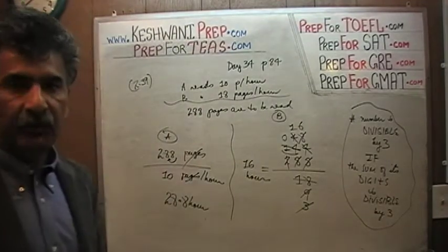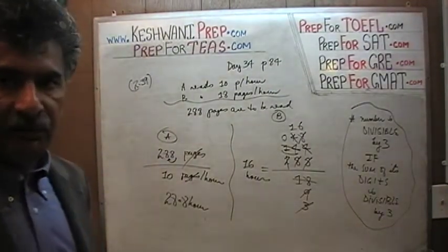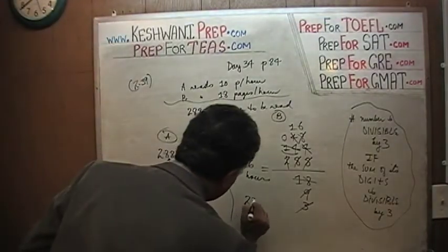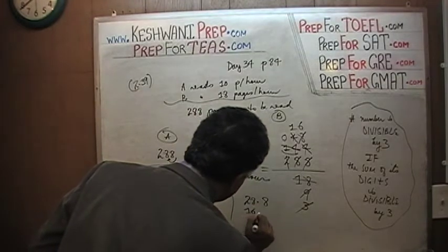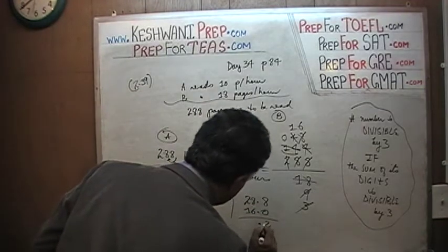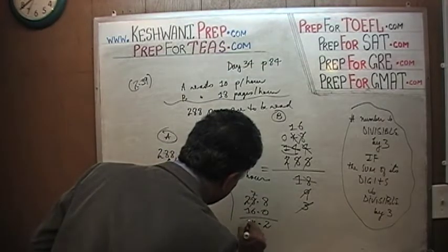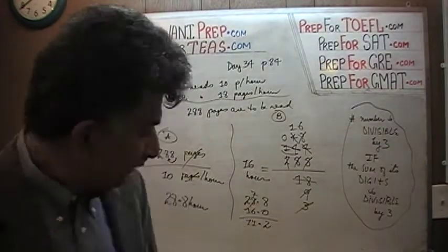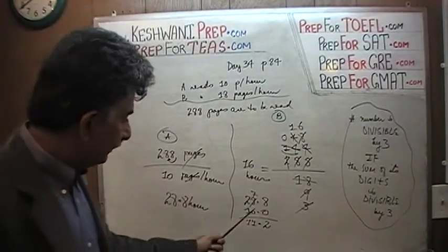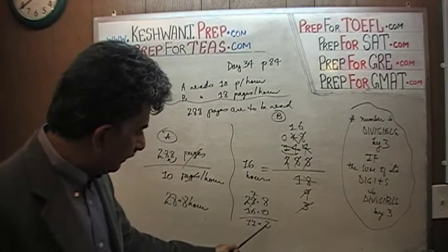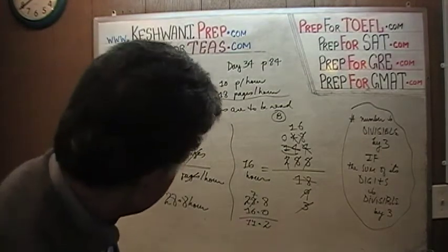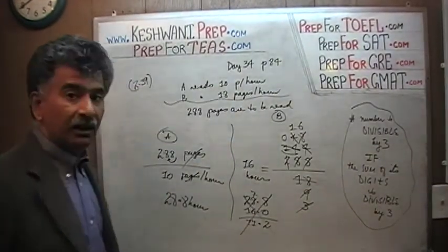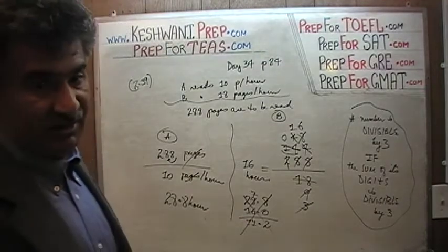B will take 16 hours; A is going to take 28.8 hours. The difference in time is 28.8 minus 16. Let me redo this carefully here: 28.8 minus 16 — the decimal gives 0.8, then 8 becomes 7 leaving 1, so... I made a mistake earlier. Let me redo it: 28.8 minus 16.0 equals 12.8. The final answer is 12.8 hours. I'm going to keep my earlier error there as a manifestation of my insanity.